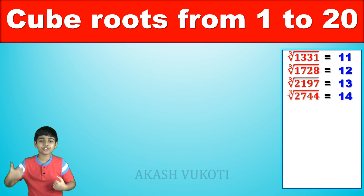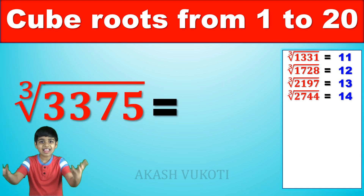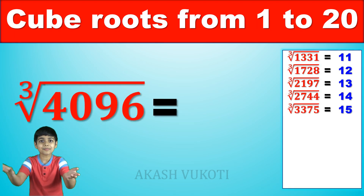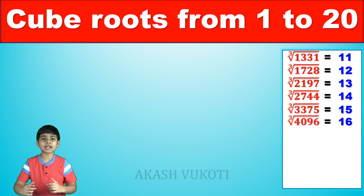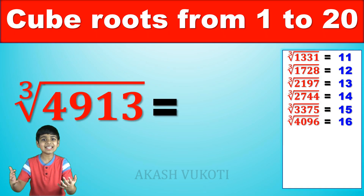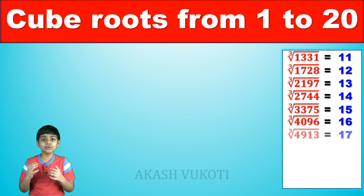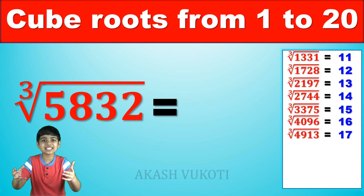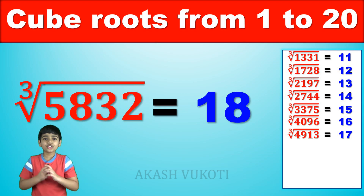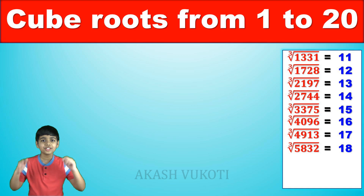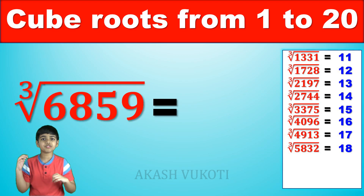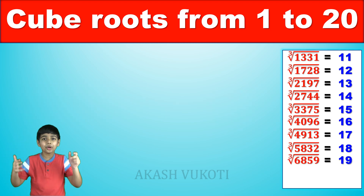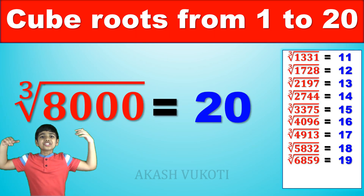The cube root of 3,375 is 15. The cube root of 4,096 is 16. The cube root of 4,913 is 17. The cube root of 5,832 is 18. The cube root of 6,859 is 19. And finally, the cube root of 8,000 is 20.